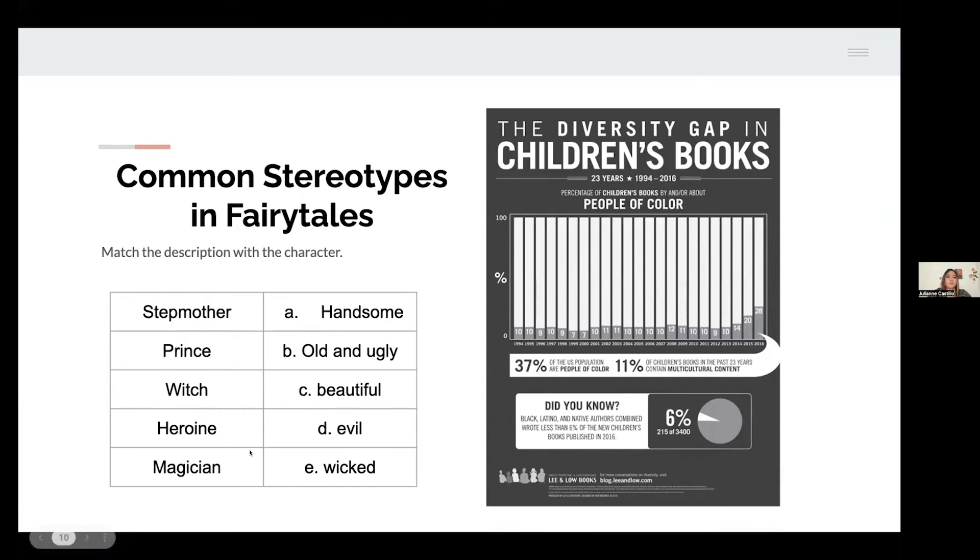What about a witch? A witch is always old or ugly. They're often referred to as hags, like the ugly old hag. Heroines or princesses are often described as beautiful. And magicians are often seen as evil.